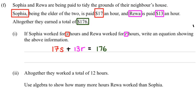The second equation, which is actually in part 2 — I'll just put a dollar sign there — is this part right here, where it says altogether they worked a total of 12 hours. That means the number of hours Sophia worked, which is S, plus the number of hours Riva worked, which is R, equals 12.